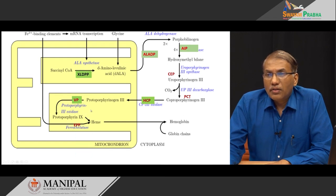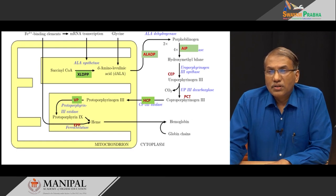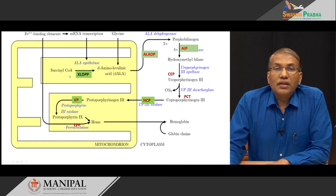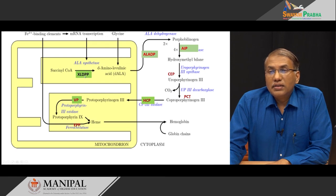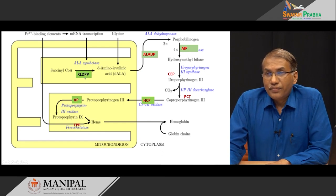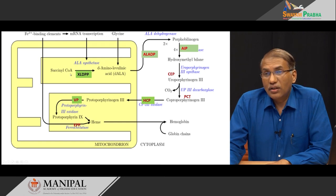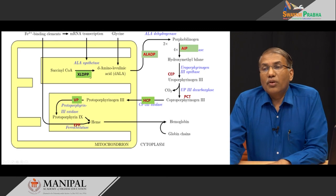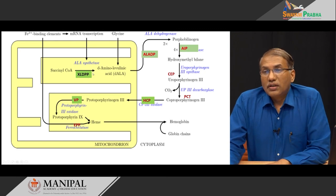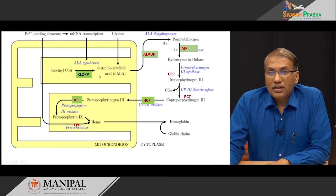One category — X-linked dominant ALA protoporphyria — does not have photosensitivity and does not fall under the acute categories. It involves ALA synthase deficiency, with accumulation of succinyl-CoA. This will not cause any problem at all because heme synthesis has not yet started at this step.